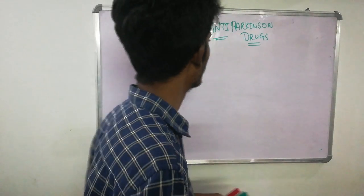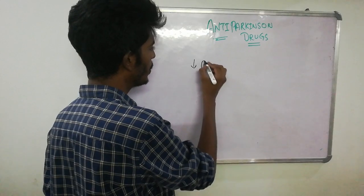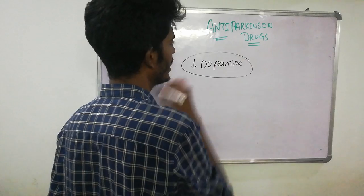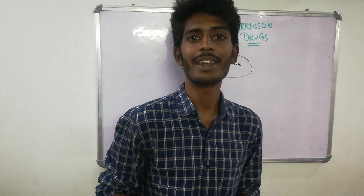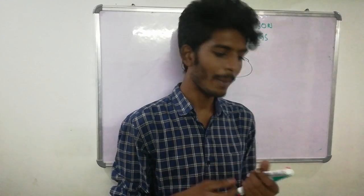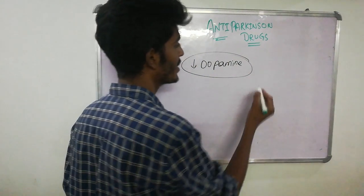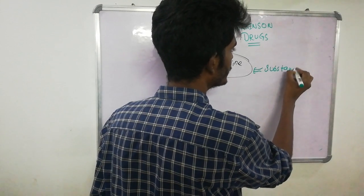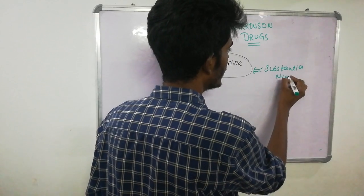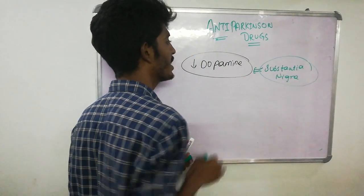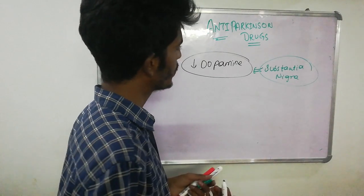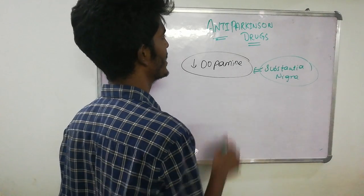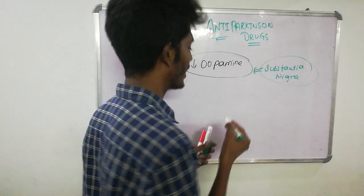Parkinson's disease is nothing but a decreased dopamine concentration in the central nervous system. We need to understand where dopamine is produced in the CNS. Dopamine is majorly produced from the substantia nigra. There are other places dopamine is produced, but a decrease of dopamine specifically in the substantia nigra leads to Parkinson's disease.